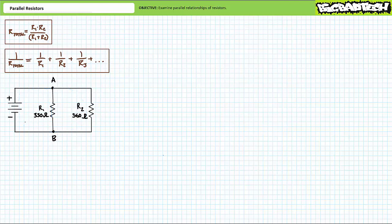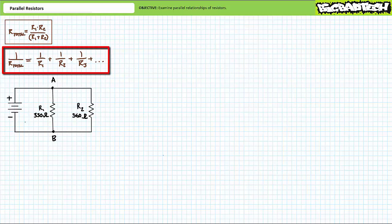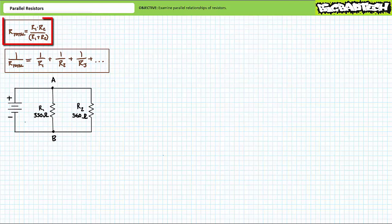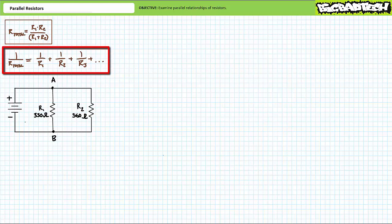There are two methods of solving for the total resistance seen by the source for a parallel combination of resistors. One is a special-purpose formula for just two resistors in parallel, and the other is a formula for any number of resistors in parallel. The first formula states the total resistance equals the product of the two resistors divided by the sum of the two resistors. The second formula states that one over the total resistance equals the sum of one over each individual resistance.